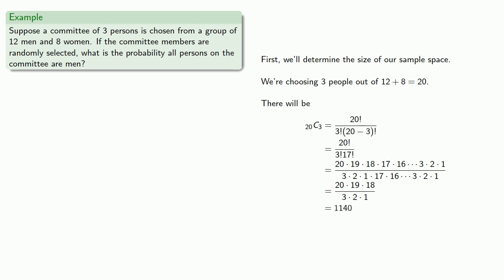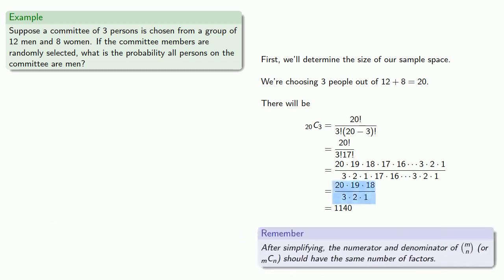And here's a useful thing to keep in mind. After simplifying, the numerator and denominator of our combination formula should have the same number of factors. In fact, if you look a little closer, you can see patterns that emerge over not only how many factors we have, but where those factors actually are. In any case, we find that our sample space has 20 combined 3, 1,140 outcomes.